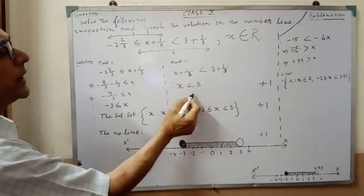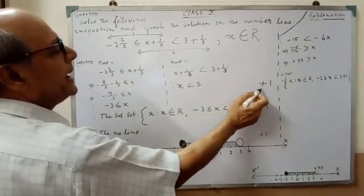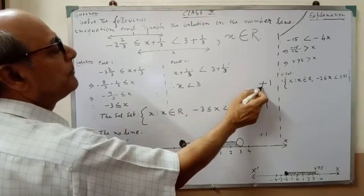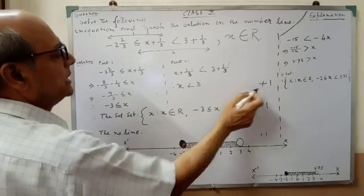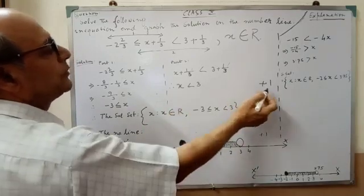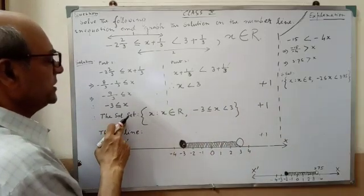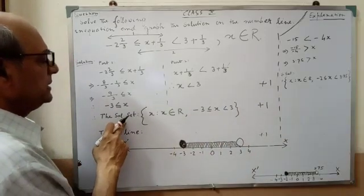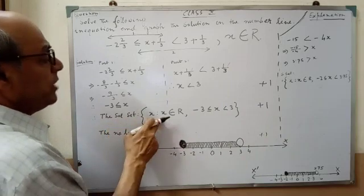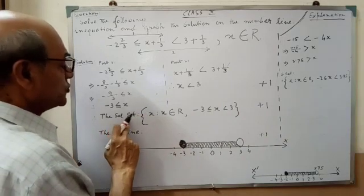After completing x plus 1/3, if you do it correctly, you will get one mark. In ICC, they are distributing part marks — this part up to here is worth one mark. For the second part, you have to write the solution set. You have to write the solution set in a specific way.